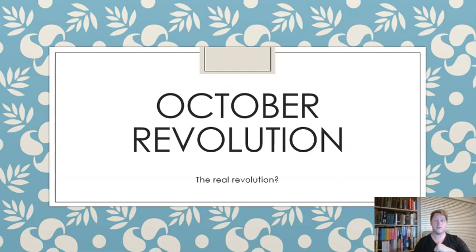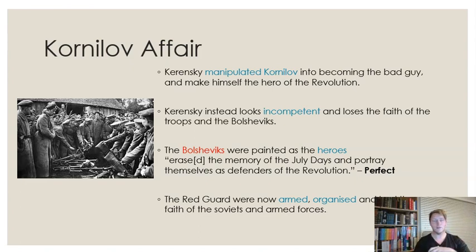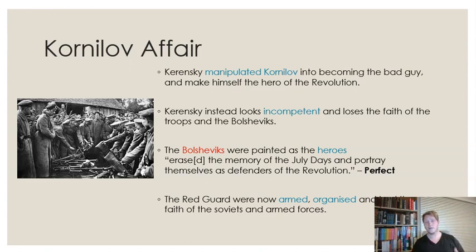So those are the three things we're going to focus on today. While there are plenty of key causes in this 1917 October Revolution — of course, we've got the February Revolution itself, the dual authority between the provisional government and the Petrograd Soviet, and the breakdown of those dynamics — one of the key causes that happens just before the October Revolution is the Kornilov affair.